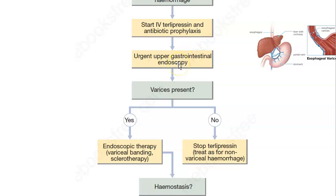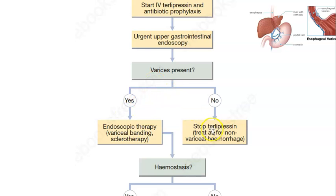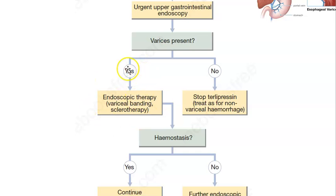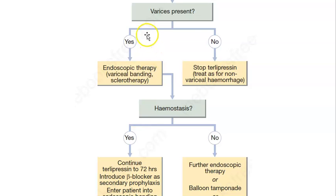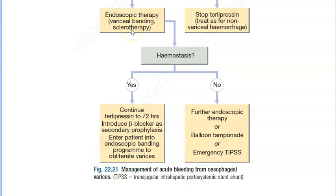Next, you do an urgent upper gastrointestinal endoscopy to find the source of bleed and check if varices are present. If varices are present, you do variceal banding or sclerotherapy to stop the bleeding. If no varices are found, you stop the terlipressin. After banding and sclerotherapy, you check for hemostasis. If hemostasis is achieved, you continue terlipressin and introduce beta blockers like propranolol for secondary prevention to prevent further variceal bleeding.